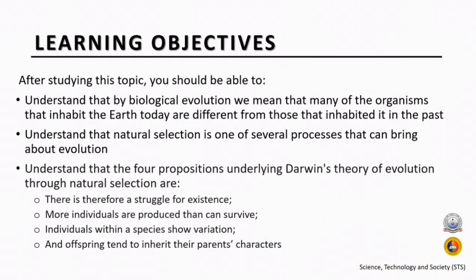Understand that the four propositions underlying Darwin's theory of evolution through natural selection are: there is therefore a struggle for existence; more individuals are produced than can survive; individuals within species show variation; and the offspring tend to inherit their parents' characters.